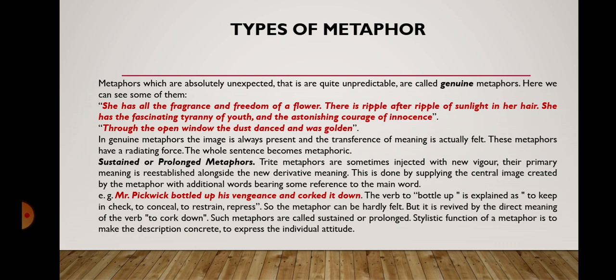Metaphors which are absolutely unexpected — that is, quite unpredictable — are called genuine metaphors. Here are some examples: 'She has all the fragrance and freedom of a flower'; 'There is ripple after ripple of sunlight in her hair'; 'She has the fascinating tyranny of youth and the astonishing courage of innocence.' Or another example: 'Through the open window the dust danced and was golden.' In genuine metaphors, the image is always present and the transference of meaning is actually felt. These metaphors have a radiating force — the whole sentence becomes metaphoric.